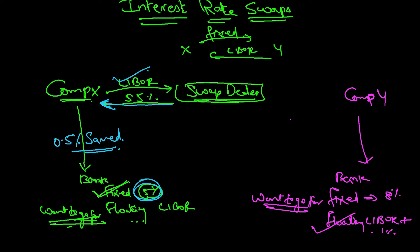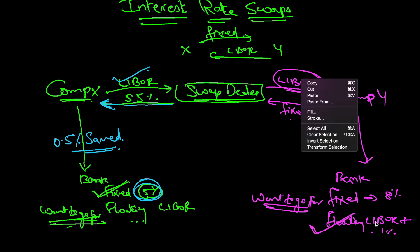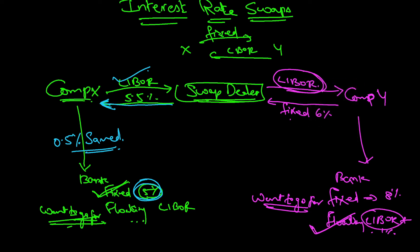So Company Y wants to go for fixed, but they will select floating. They agree to pay floating rate of LIBOR plus 1% to the bank, and then they enter into an interest rate swap with the swap dealer, wherein they ask the swap dealer to pay LIBOR, and they agree to pay a fixed rate of 6% to the swap dealer.